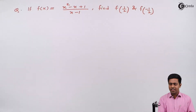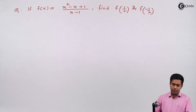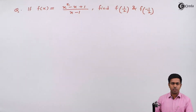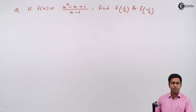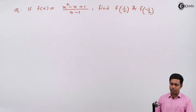Hello everyone. Here we have been given f of x which is x squared minus x plus 1 upon x minus 1, and we have to find f of 1 by 2 and f of minus 1 by 2. So let's start with it.